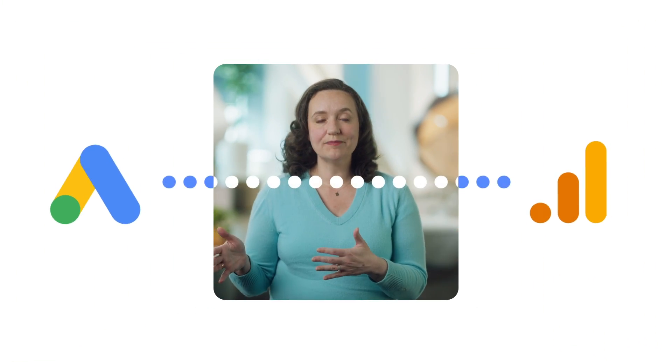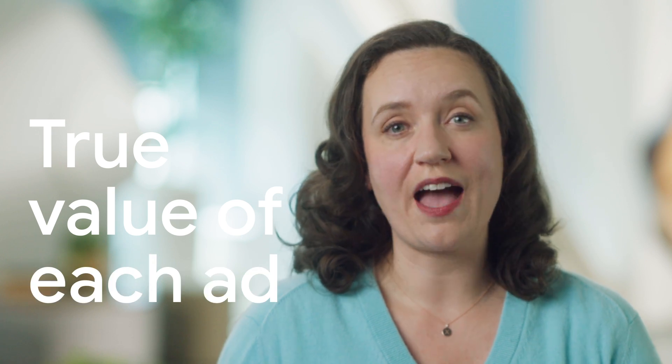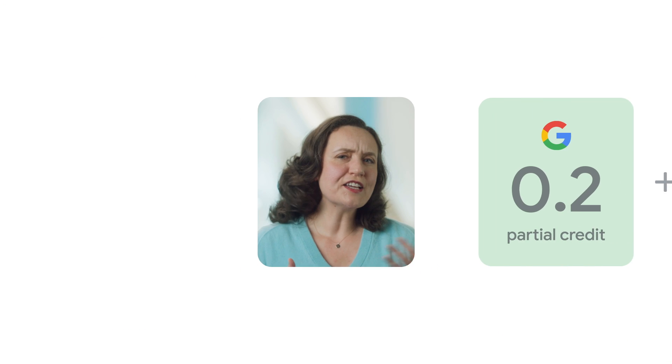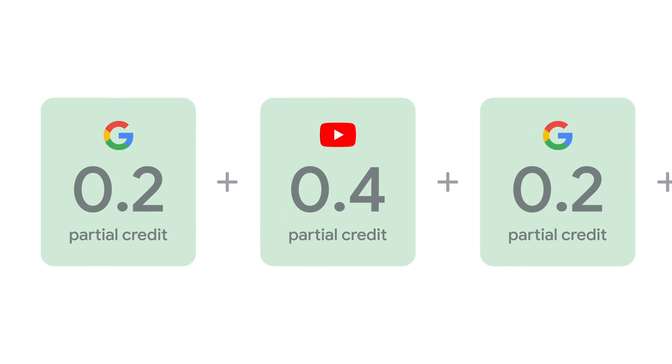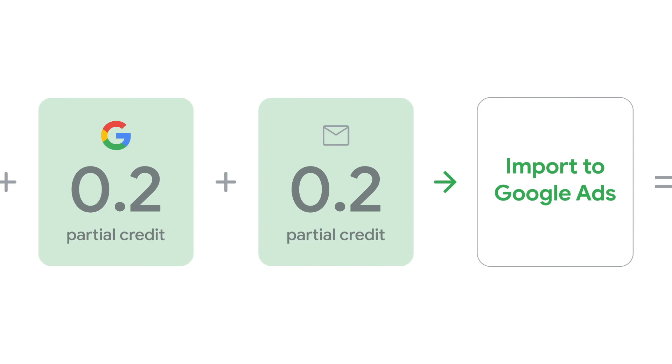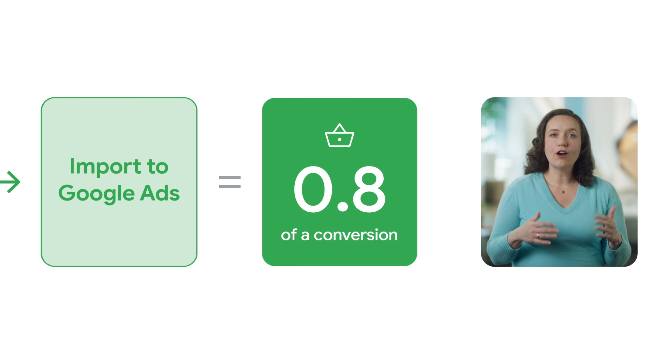We're excited to introduce a new way to import web conversions from Google Analytics 4 to Google Ads. Now you're able to import fractional credits for all Google Ads touchpoints, so you can bid on the true value of each ad. By using Google's AI, data-driven attribution automatically assigns partial credit to each cross-channel touchpoint that led to a conversion. Say a consumer clicks on three Google Ads in a newsletter before making a purchase — those partial credits are then imported to Google Ads, so you can improve performance with bidding that accounts for all channels.